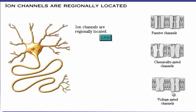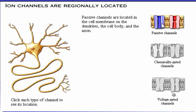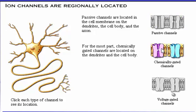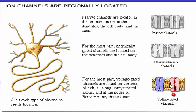Ion channels — passive, chemically gated, or voltage gated — are regionally located in the neuron. Passive channels are located in the cell membrane all over the neuron: on dendrites, the cell body, and the axon. For the most part, chemically gated channels are located on the dendrites and cell body of the neuron. For the most part, voltage gated channels are found on the axon hillock, all along myelinated axons, and at the nodes of Ranvier in myelinated axons.